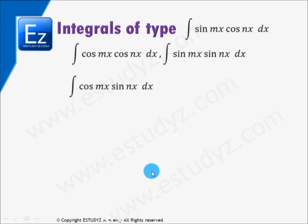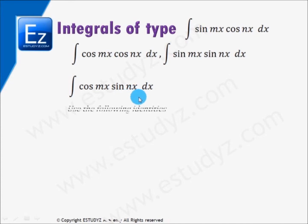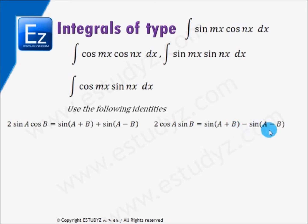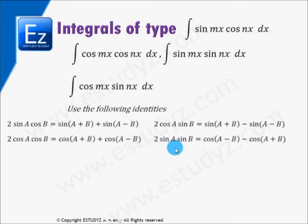In the next type of integral, we solve integrals of the form sin(mx) · cos(nx), cos(mx) · cos(nx), sin(mx) · sin(nx), or cos(mx) · sin(nx). You need to use the following trigonometric identities: 2 sin A cos B = sin(A+B) + sin(A−B); 2 cos A cos B = cos(A+B) + cos(A−B); and 2 sin A sin B = cos(A−B) − cos(A+B).